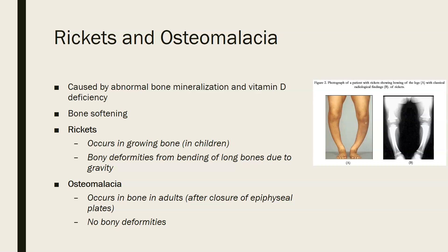Rickets is a bone softening that occurs in growing bones. It occurs in children, and because of it you see bony deformities from the bending of the long bones due to gravity.